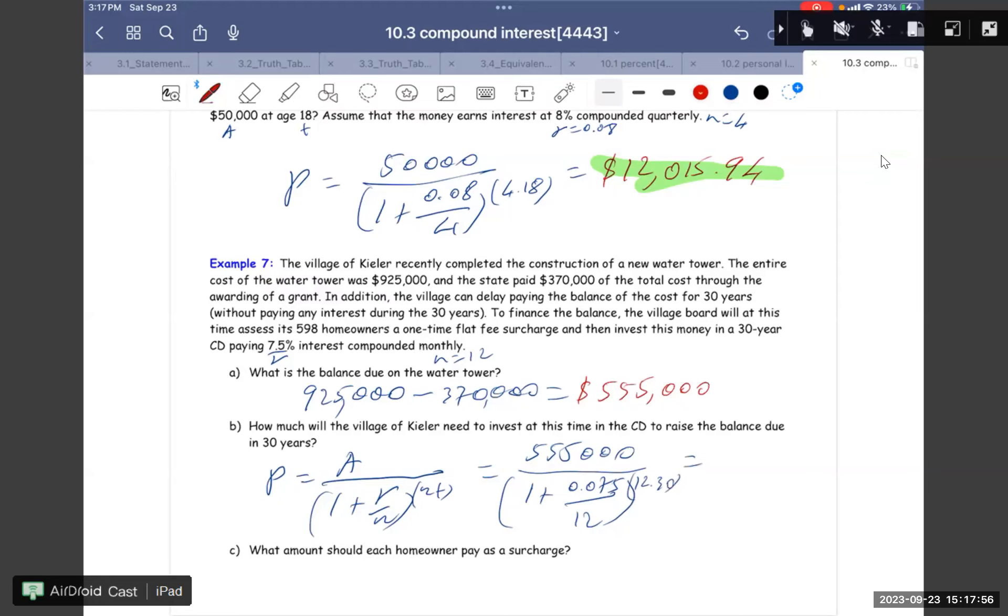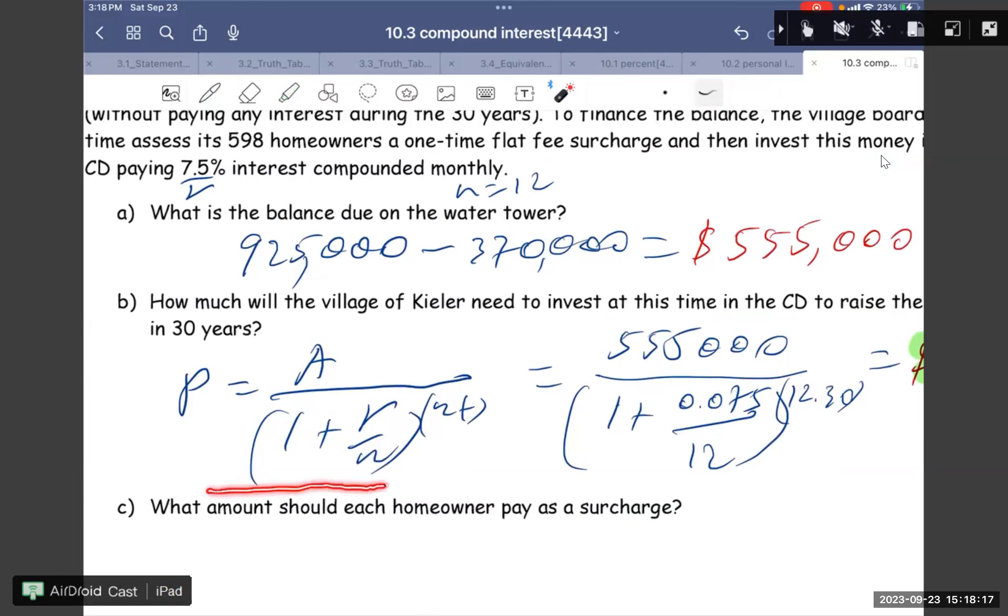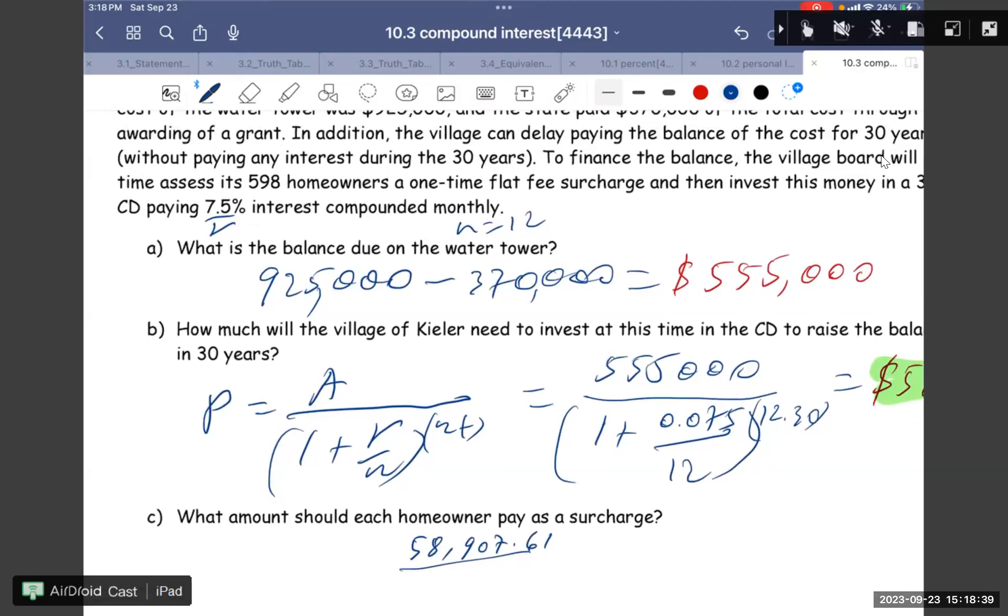And then how much will the value, how much will the village of Kibler need to invest in a CD to raise the balance in 30 years? So in 30 years, P equals A over (1 plus R/N) to the power of (N times T). So we have $555,000 over (1 plus 0.075 over 12) to the power of (12 times 30). So this one has $59,807.61. And then for part C, what amount should each homeowner pay? So we have $59,807.61 divided by 590 homeowners. So each homeowner pays about $101.37. So thank you very much.